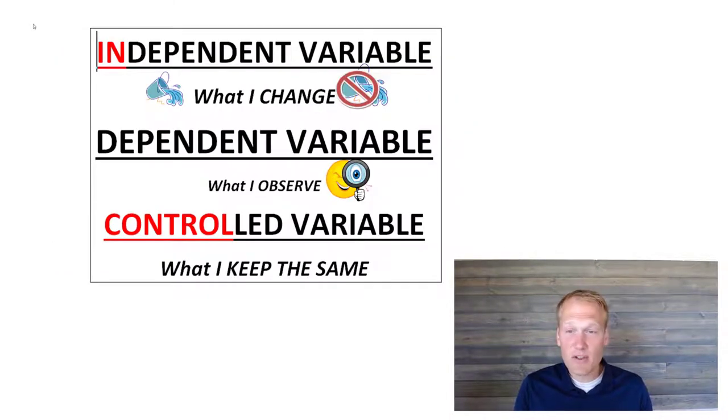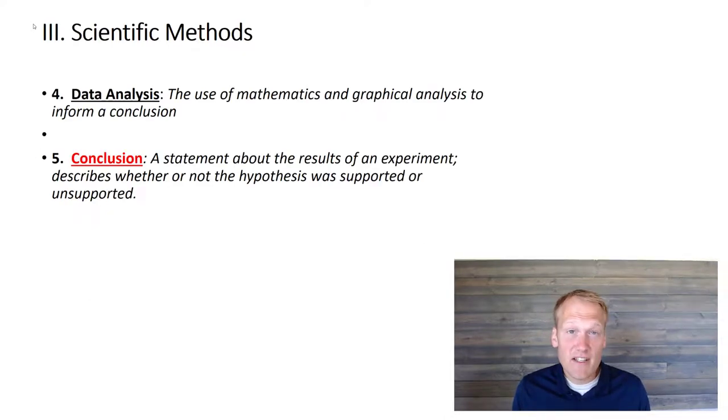So just in review, independent variable is what I change, the dependent variable is what I observe, and the controlled variable is what I keep the same. After we've done the experiment, it's time to analyze the data.